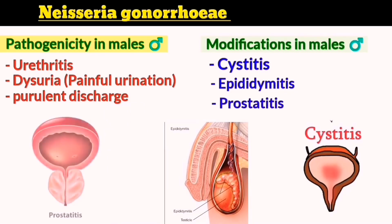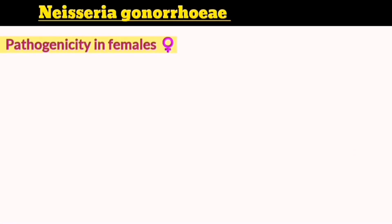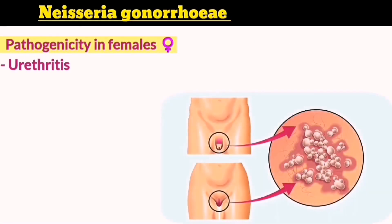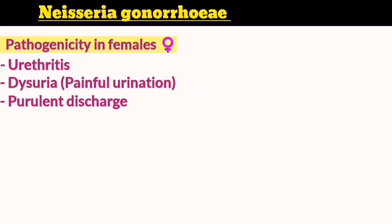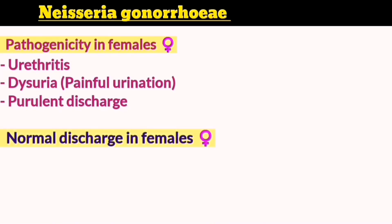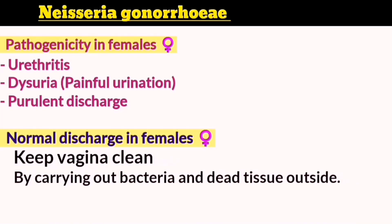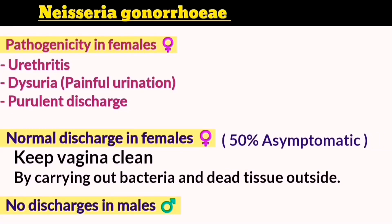It can also cause prostatitis, an infection of the prostate, which secretes a liquid that nourishes and protects sperm during ejaculation and neutralizes the pH of urine. Infection in women shows similar symptoms, also causing urethritis, dysuria, and purulent discharge. Around 50% of women carry the bacteria but are asymptomatic, and disease is more easily identified in men because they don't typically produce discharge.